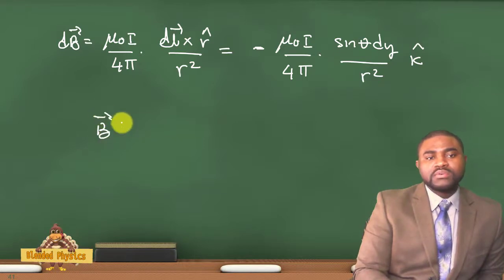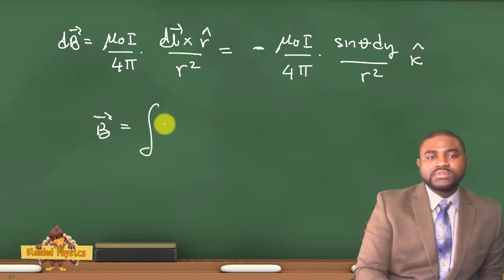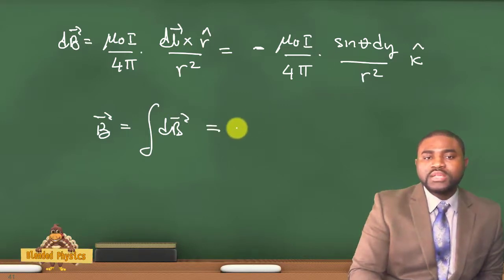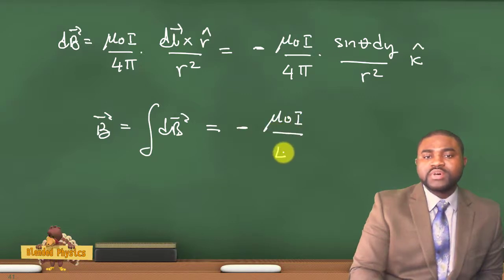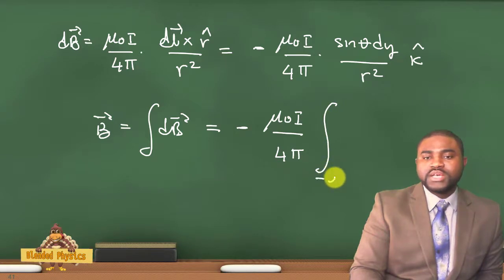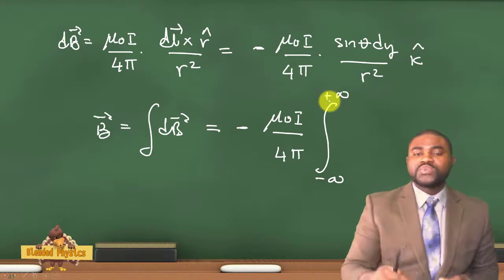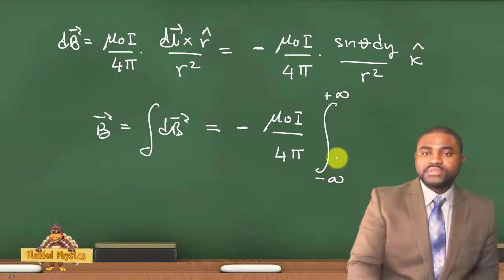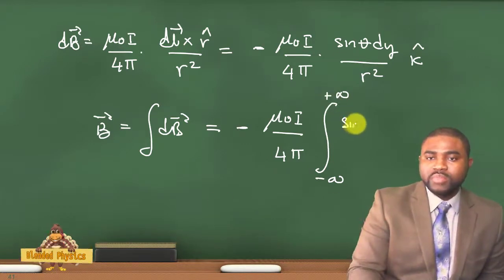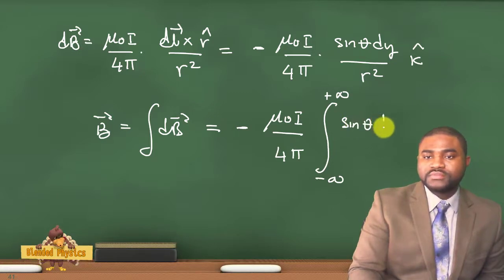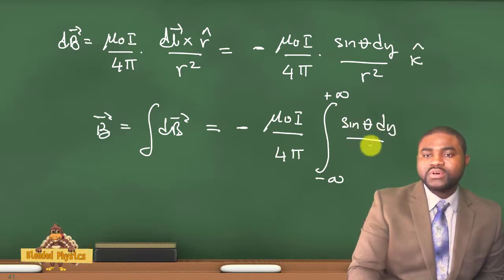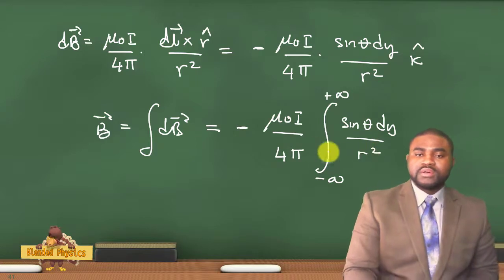Therefore, B — which is the integral of dB — will be equal to negative μ₀I over 4π, multiplied by k̂, times the integral from negative infinity to positive infinity, because we are dealing with an infinite wire, of sinθ dy all divided by r squared.